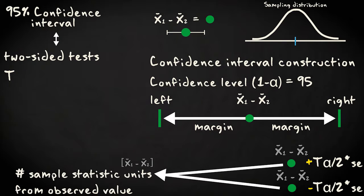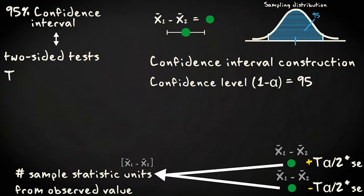These boundaries represent the number of sample statistic units above and below the observed sample statistic value associated with an area of 95% under the sampling distribution.